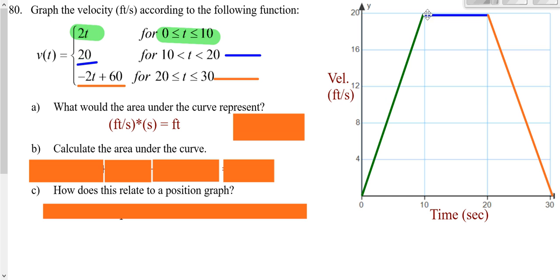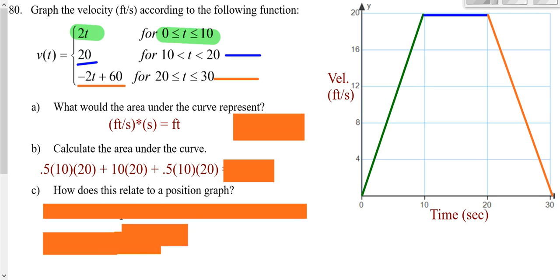Or you could break it into a triangle for the green part, a rectangle for the middle, and a triangle for the orange part. Either way, you get 400 units, which is 400 feet since that's our unit of distance for this problem.